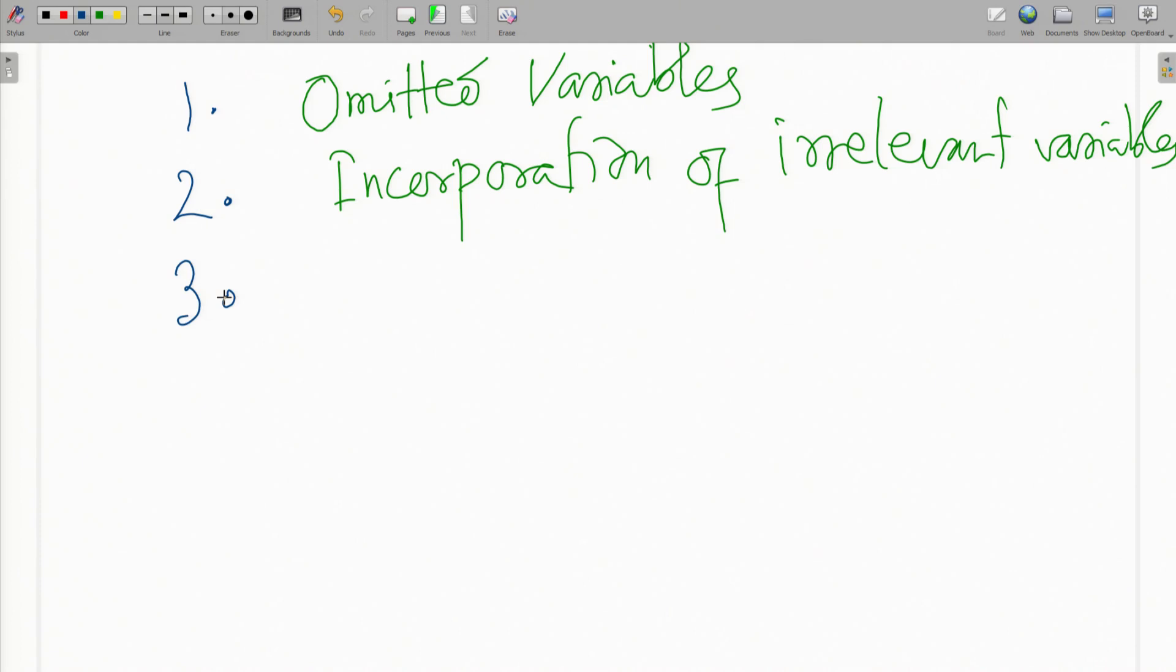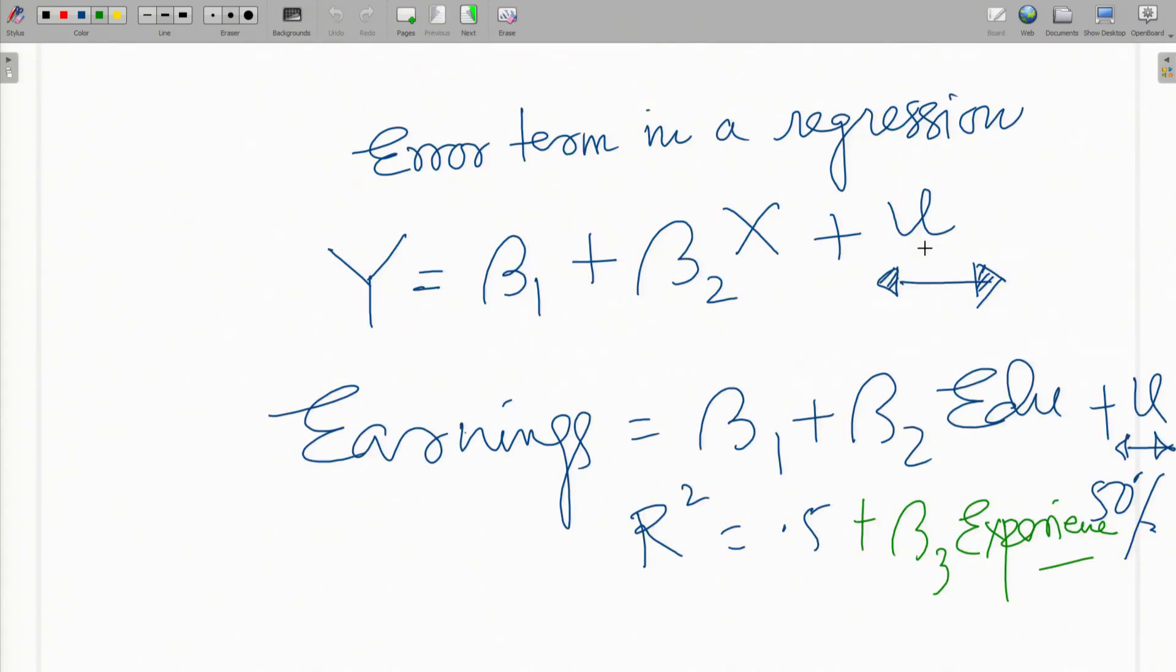Third, the third source of error could be functional misspecification. What I mean by functional misspecification is that the way these variables are related—here I have assumed that education, experience all are linearly related with earnings, but there could be some other forms of these variables which might actually have a more direct relationship with earning.